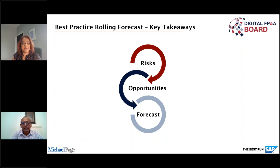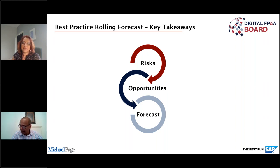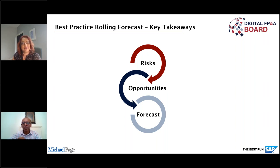Thank you very much, Saeeda. Excellent presentation. You touched on risks and opportunities within your own industry, and it applies across all sectors. A couple of key things you mentioned: the importance of impact — reassessing where you went wrong and that continuous loop — and the rolling forecast becoming the basis for next year's budget, which massively reduces time if you're still doing a traditional budget.